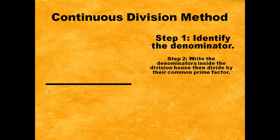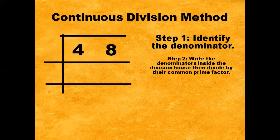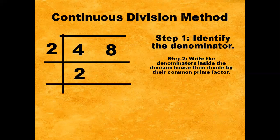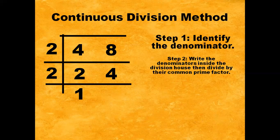Step number two: write the denominators inside the division house, then divide by their common prime factor. We have four and eight. Four and eight can both be divided by two. Four divided by two gives two, and eight divided by two gives four. Then two and four can also be divided by the prime factor two. Two divided by two gives one, and four divided by two gives two.